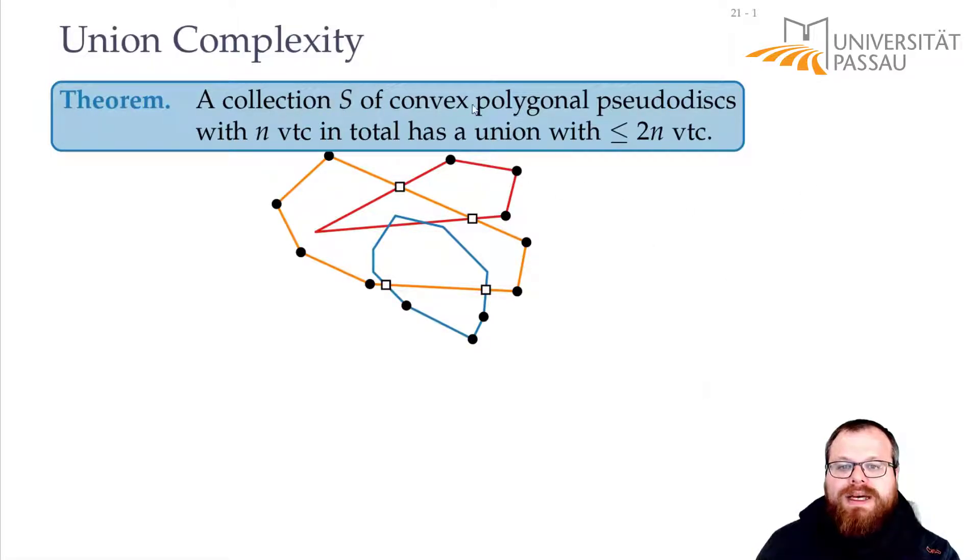If we have a collection of convex polygonal pseudodisks with n vertices in total, then their union has at most 2n vertices. These convex polygonal pseudodisks, that's exactly our configuration polygons.